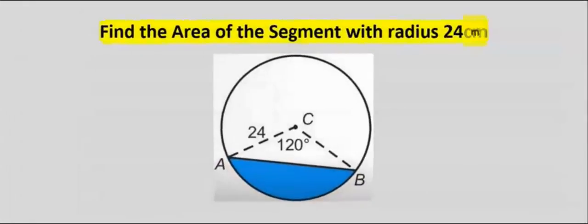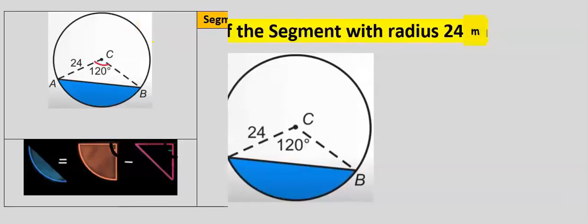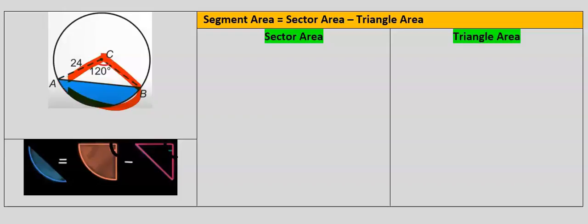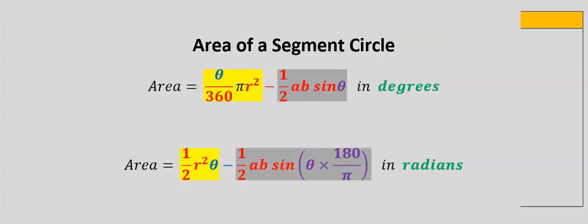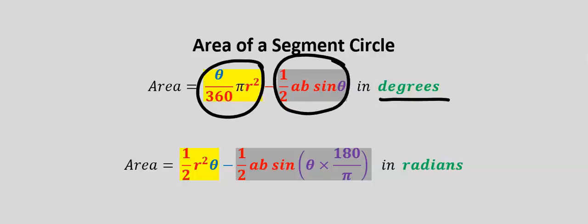Find the area of the segment with radius 25. We want to find the area of this segment which is enclosed in a sector. Step one: consider the angle at the center. The angle at the center is in degrees, so we are going to use the area of the sector minus the area of the triangle.